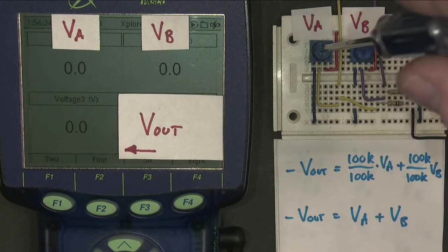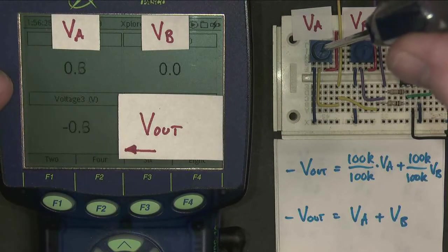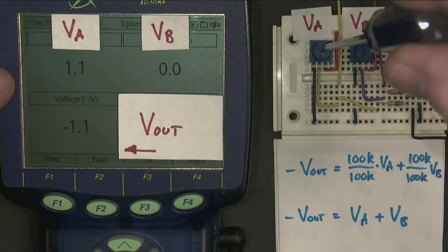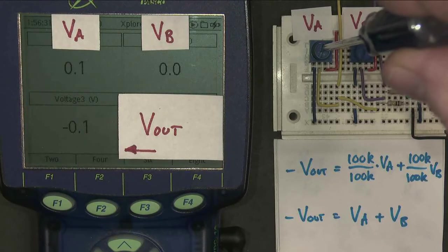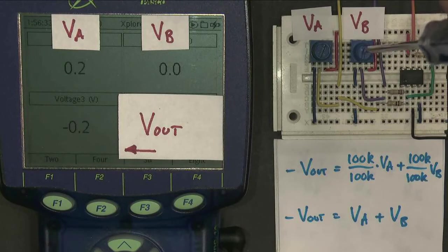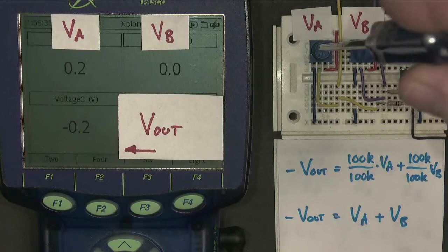I'll change VA first. So VA becomes one volt. And Vout is minus one volt. So that seems to work. I'll change VB. Try and get that back to zero first.